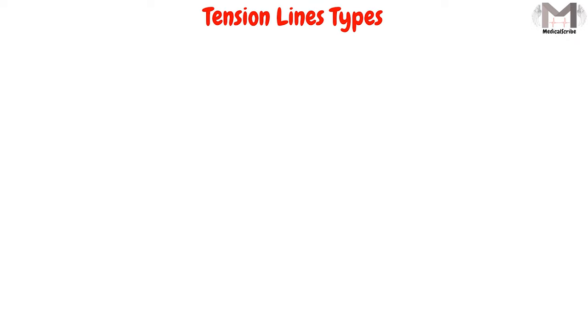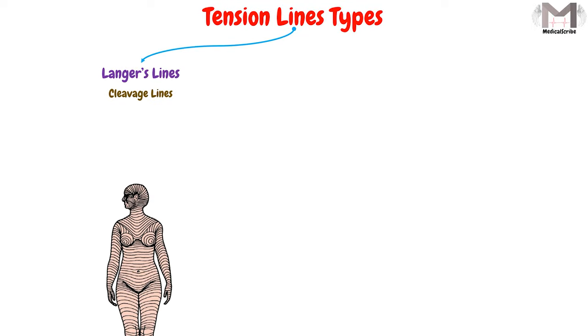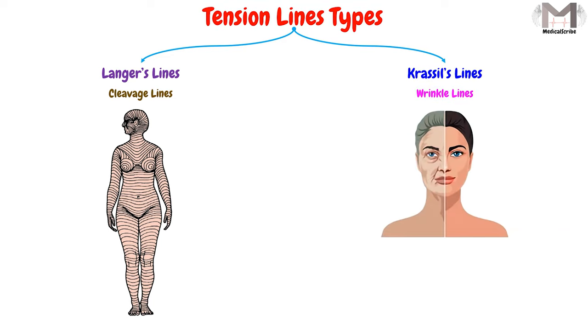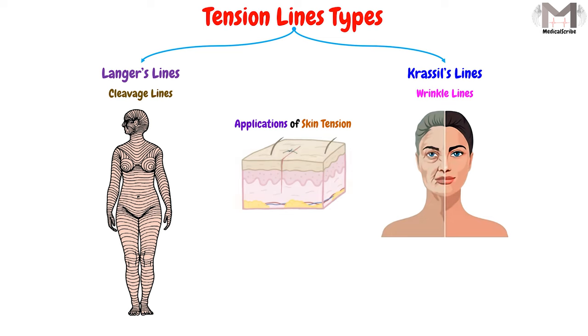After understanding the origin of these tension lines, we have another question: how many types of tension lines are there? We have two main types of skin tension lines — Langer's lines, also called cleavage lines, and Crasse's lines, also called wrinkle lines. These two types, along with the applications of the skin tension lines, will be explained in Part 2 in the upcoming video.